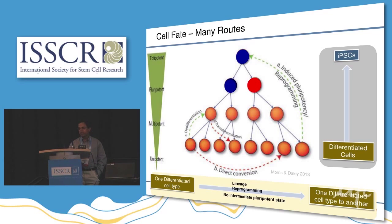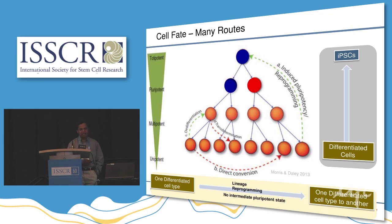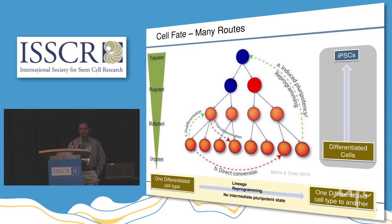We have known quite a bit since 2006: you take a differentiated cell and push it back through the iPSC process. We've come a long way understanding the transcription factors that play into generating totipotent or pluripotent cells. But the reverse — taking from a pluripotent cell to a unipotent differentiated cell — is still complex. Researchers are also applying trans-differentiation: directly converting one differentiated cell type into another, bypassing the pluripotent state — a kind of lineage reprogramming.